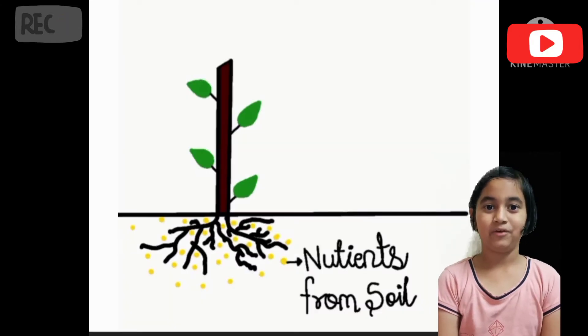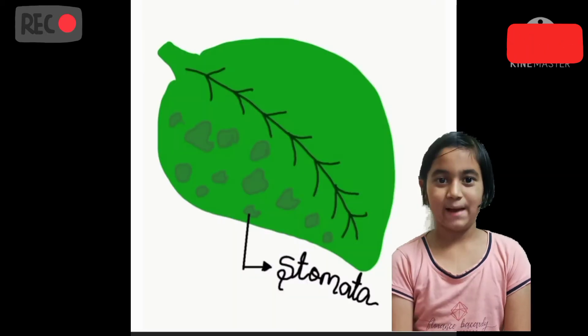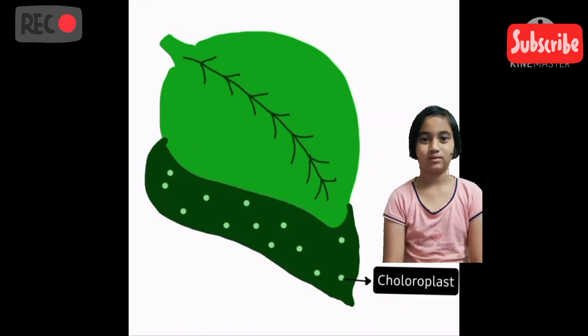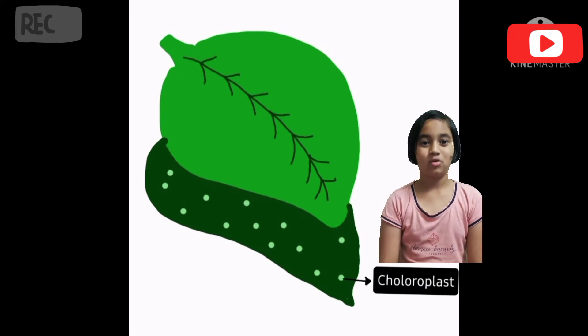Plants also take nutrients from soil and absorb it. At the backside of leaves, there are tiny pores called stomata. Stomata consists of a pigment called chloroplast.